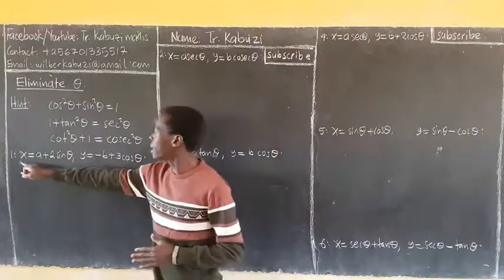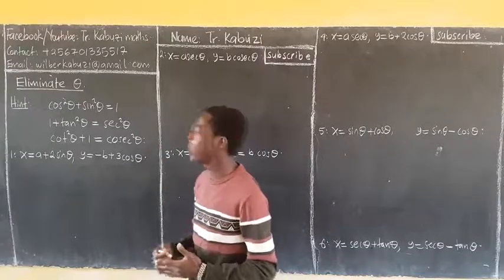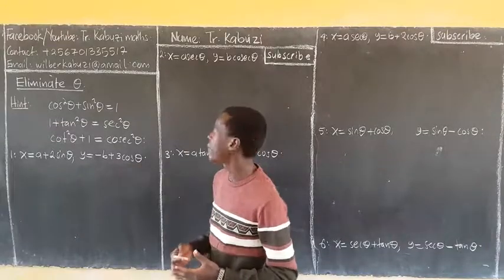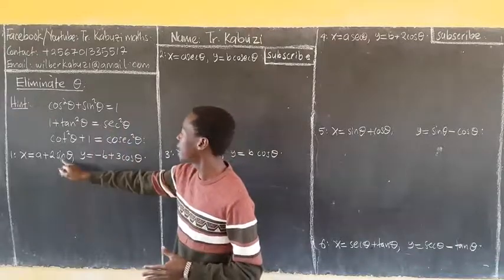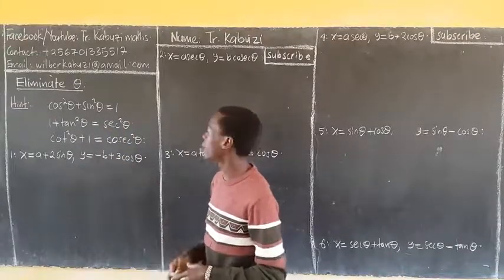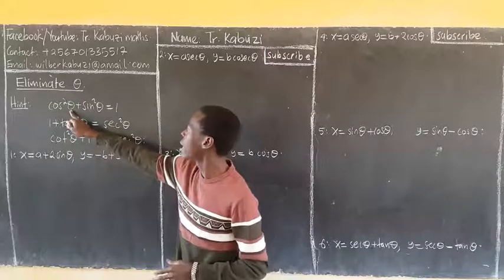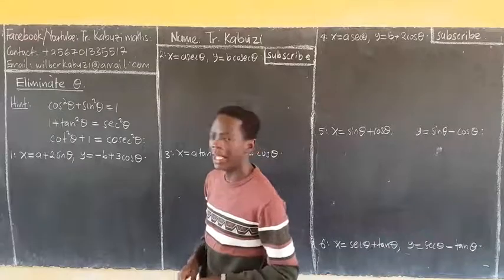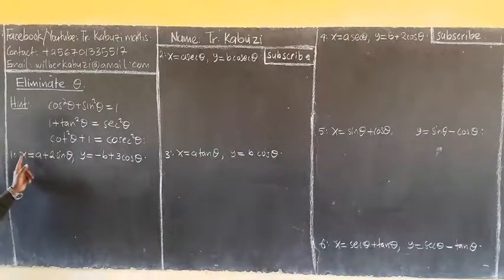For example, if you want to eliminate theta in number one, you always ask yourself what functions we have. You see we have sin and we have cos, then you ask yourself, is there an identity that involves both sin and cos? Yes. So you always make cos the subject and also sin the subject. To make sin the subject here, I will take this side and divide by 2.